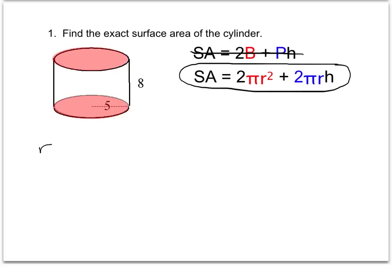All we need for this is r and h. Keep in mind that we're asked to find the exact surface area, so we'll leave it in π form, and the final answer will have π in it.